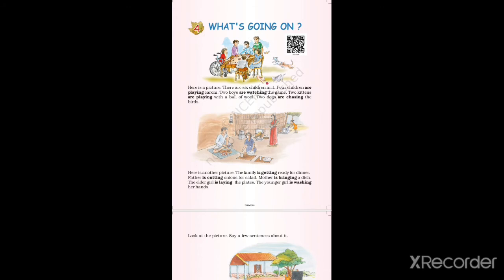Here is another picture. The family is getting ready for dinner. Father is cutting onions for salad. Mother is bringing a dish. The elder girl is laying the plates. The younger girl is washing her hands.